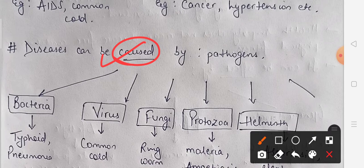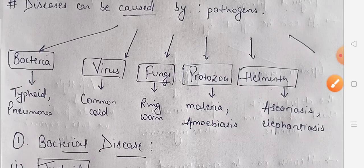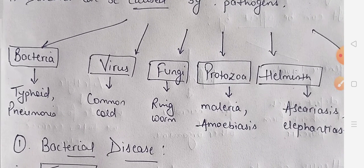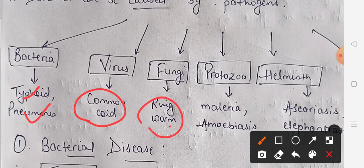The things responsible for diseases are called pathogens. Pathogens are the disease-causing microorganisms. These pathogens can be bacteria, virus, fungi, protozoa, or helminths. In this chapter we will study related diseases: from bacteria — typhoid and pneumonia; viral diseases — common cold; fungal diseases — ringworm; protozoan — malaria and amoebiasis; and helminthic diseases — ascariasis and elephantiasis.